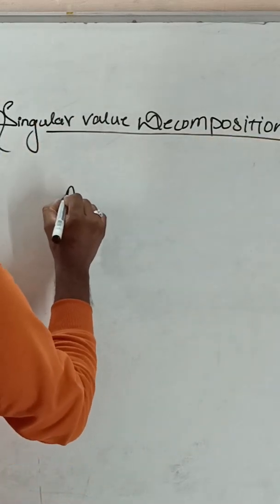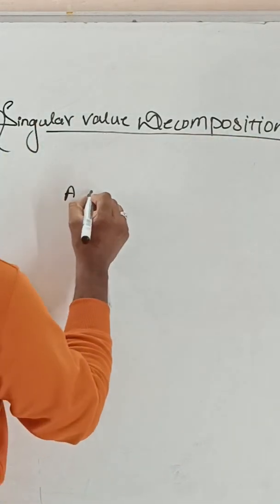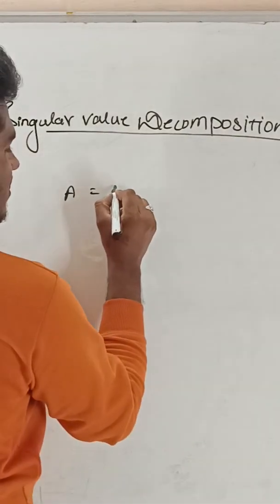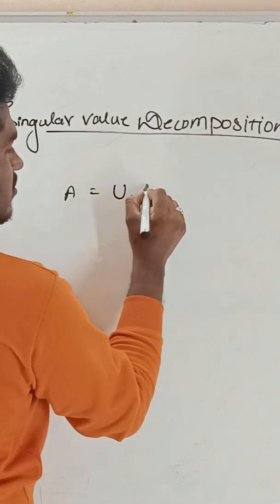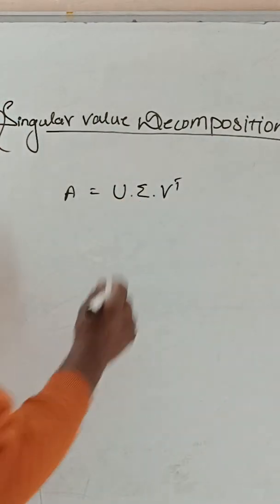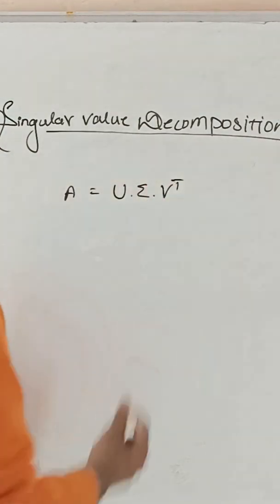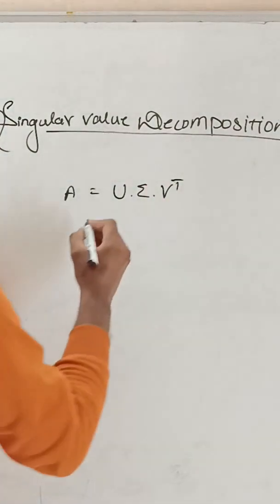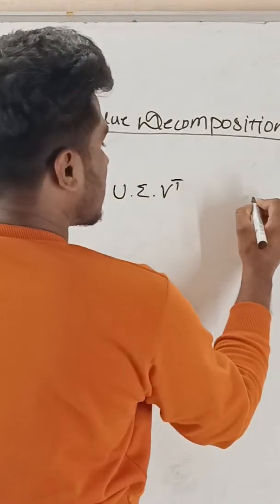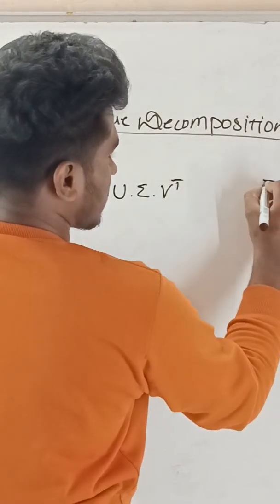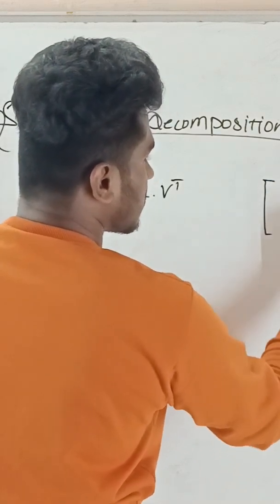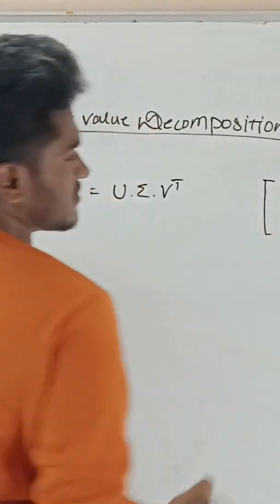Let us assume the given matrix as A. That matrix is going to be divided as U into sigma into V transpose. This particular matrix is having order 3 by 2, that is 3 rows and 2 columns.